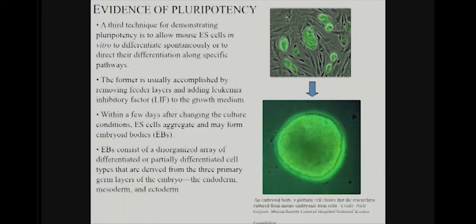What people do most now is in vitro differentiation: by changing the growth factors in the medium, you allow differentiation to go down various pathways and you see cardiomyocytes and other cell types.